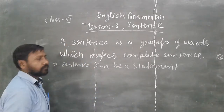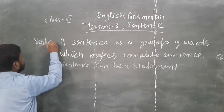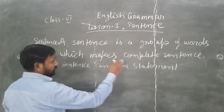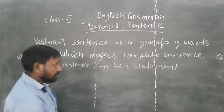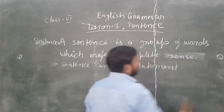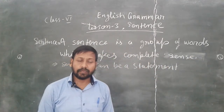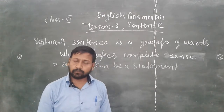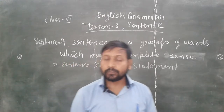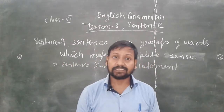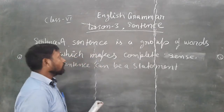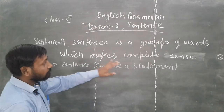Firstly, what is a sentence? A sentence is a group of words which makes a complete sense. For example, 'I am going to school' — these are a group of words, and this has a meaning. Similarly, 'I am teaching to all of you' — this is a group of words and it is a very meaningful sense. So a sentence is a group of words which makes a complete sense.